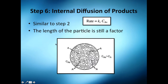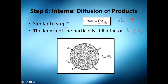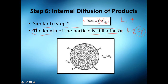Of the pellet, and it's very similar to step two. The rate is this one here, and if you want to have a rapid rate or a high rate, you need to have kr relatively high. To achieve that, you need to have a low particle diameter. The length of the particle is a factor — it's directly dependent to the particle.